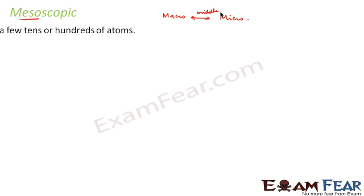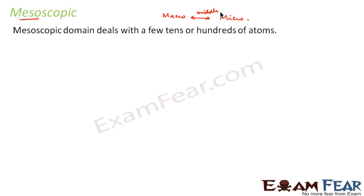So now let us see the third one, that is the mesoscopic domain. Meso - the name suggests it is something in between macro and micro, something which is neither too big nor too small. The mesoscopic domain deals with a few tens or hundreds of atoms. It deals with several groups of atoms. Well, these days this mesoscopic domain is emerging as an exciting field of research.